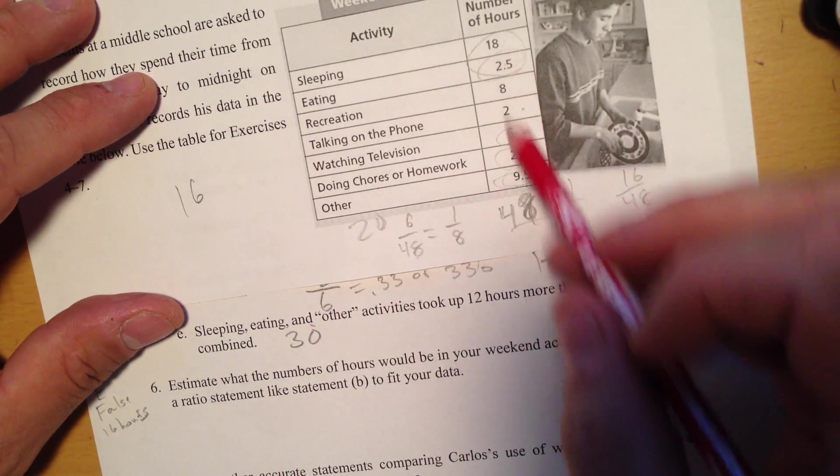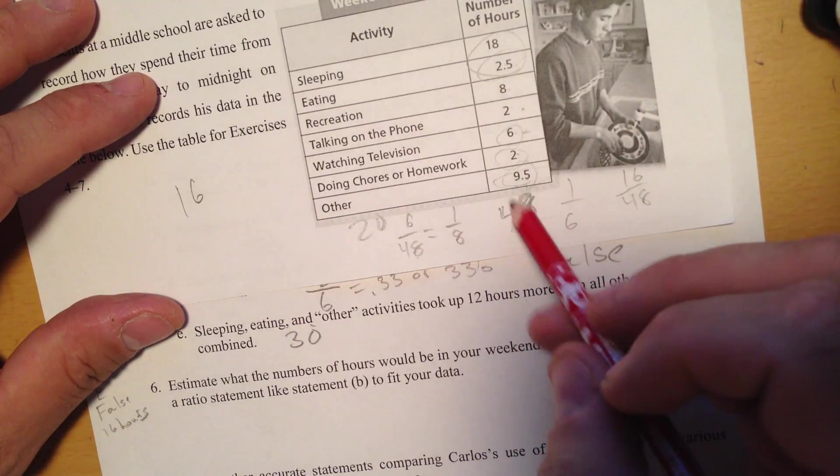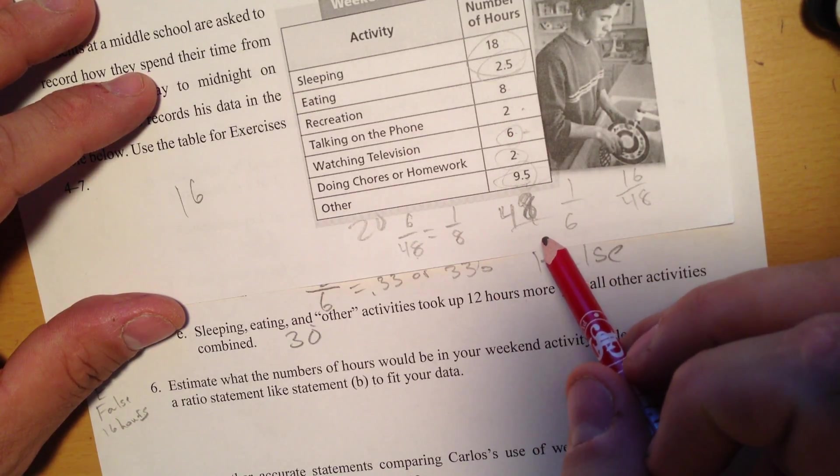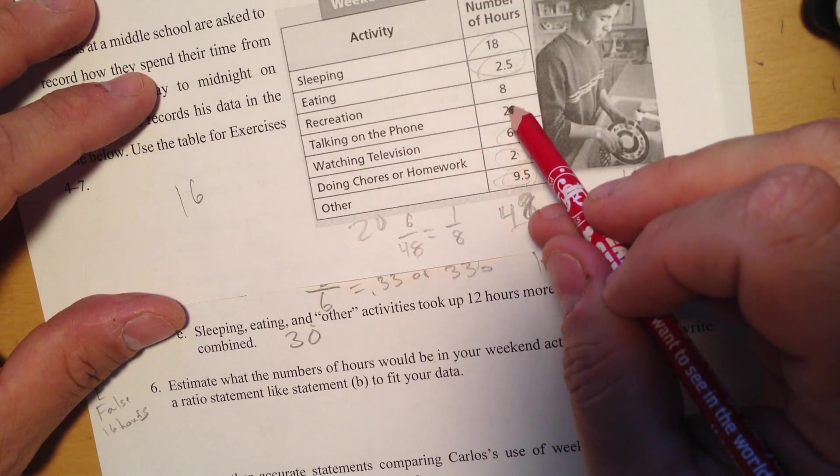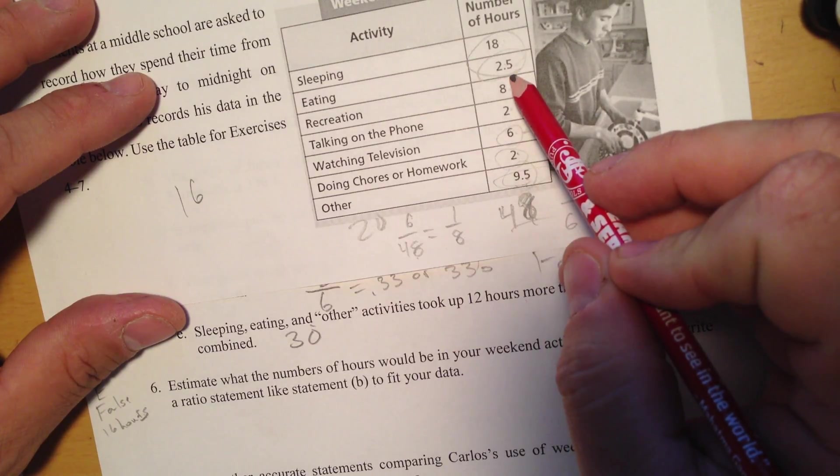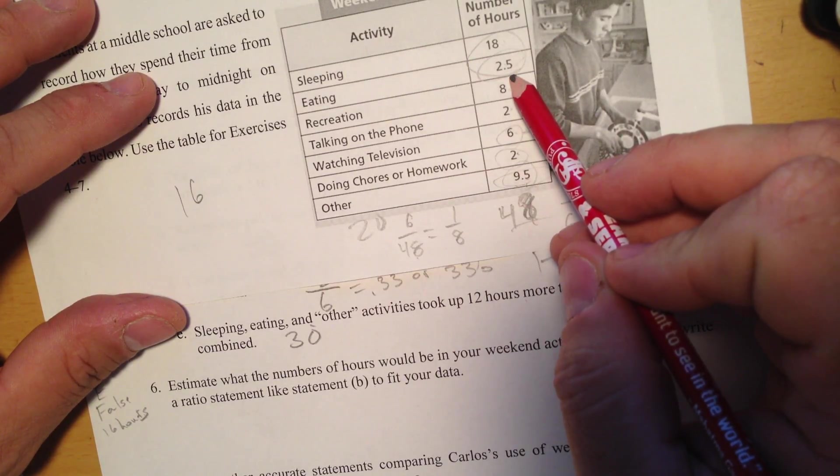Now, how much is everything else? Well, everything else is just minus from 48. Now I can add them up. 8, 9, 10, and then another 8 is 18.